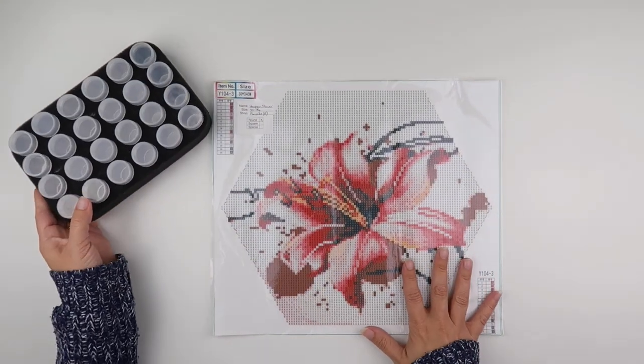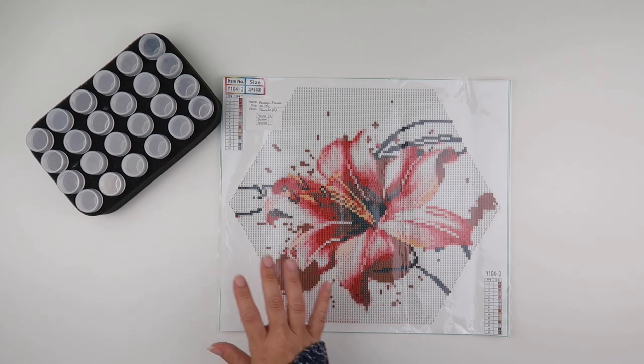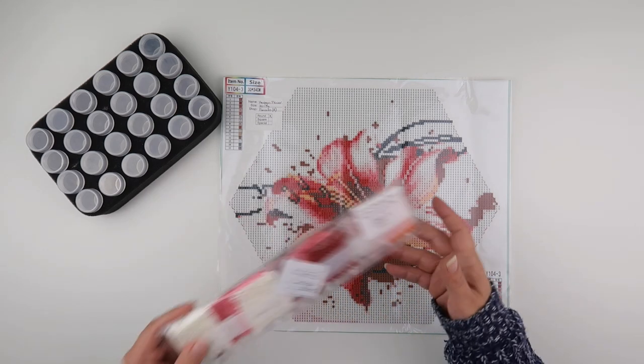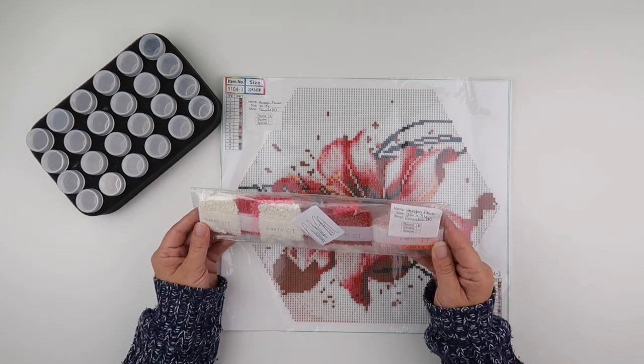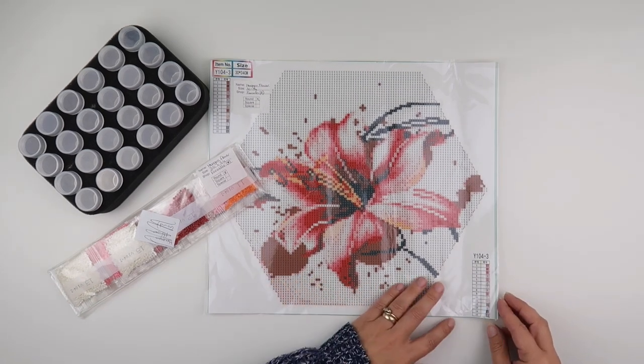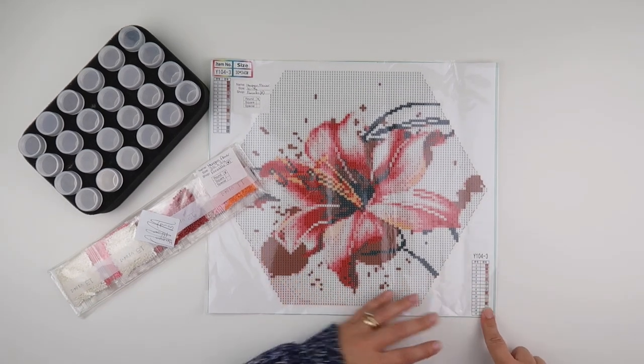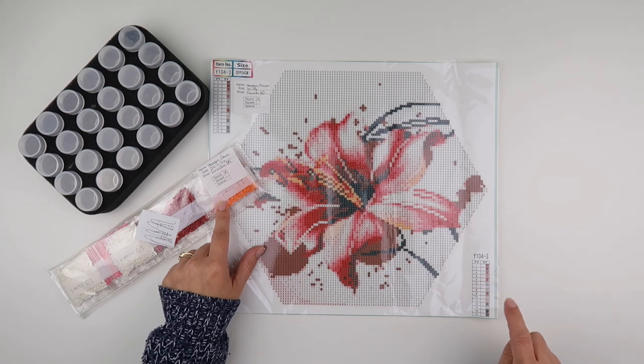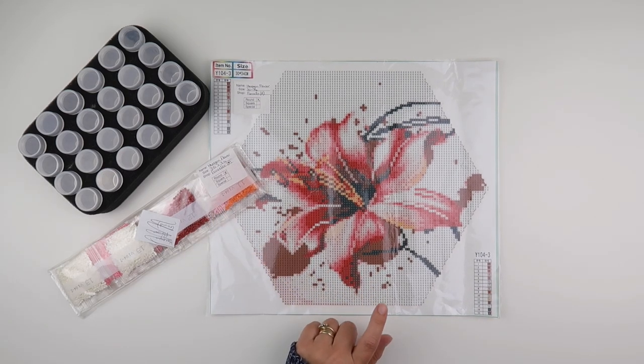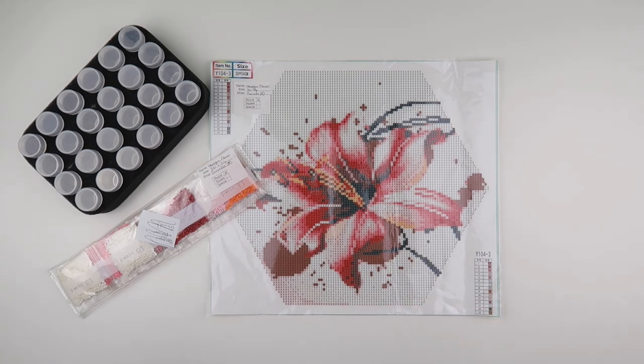So this is the first one that I need to do, so let me find the diamonds for it. This is a hexagon flower one from Fancells, and this one actually does not have DMC numbers on the packet or on the diamond painting itself. So this should be a nice quick one, however I have left my stickers in the other room, so I'll be back.